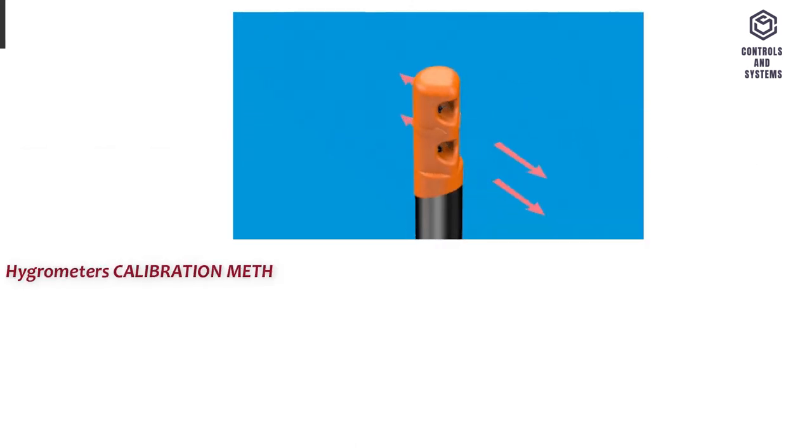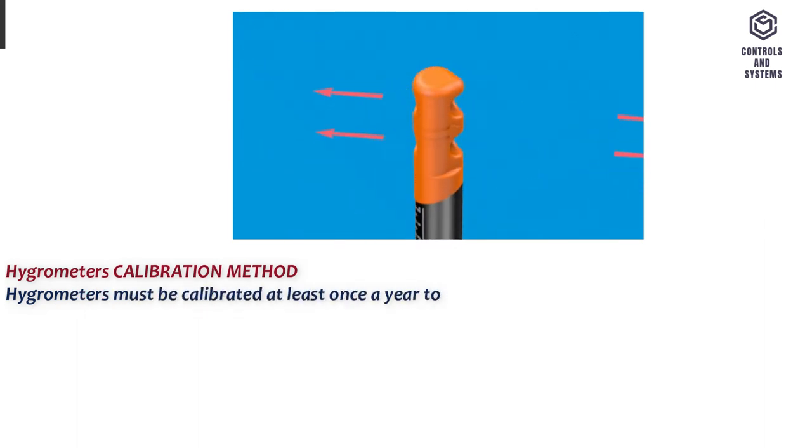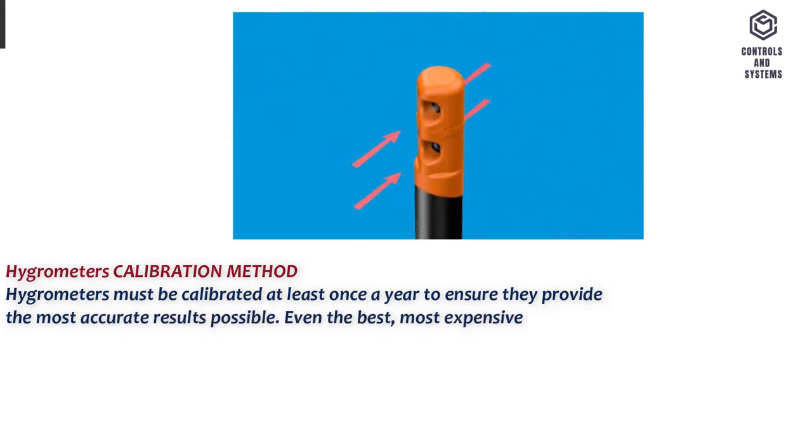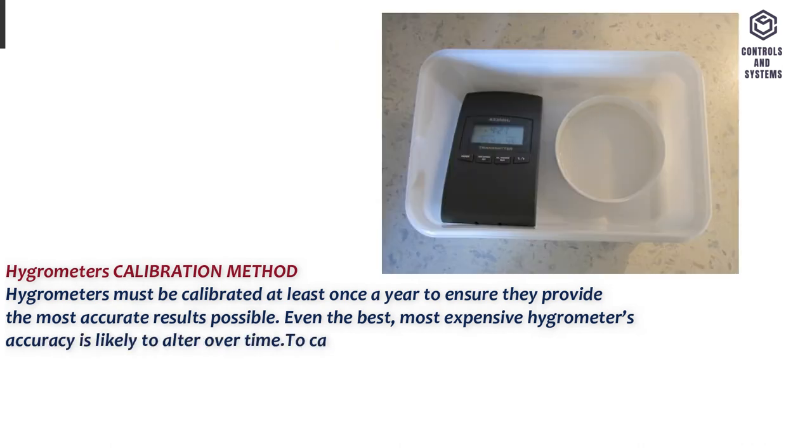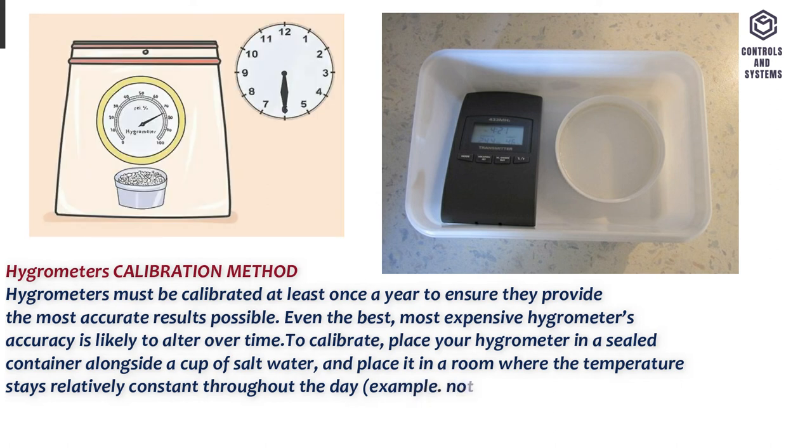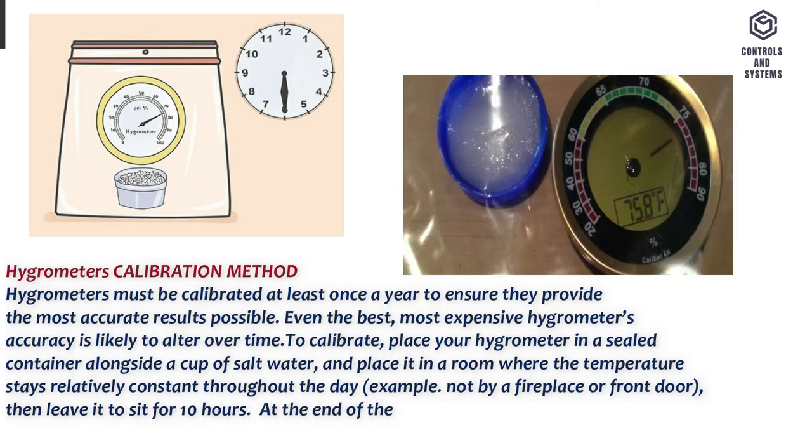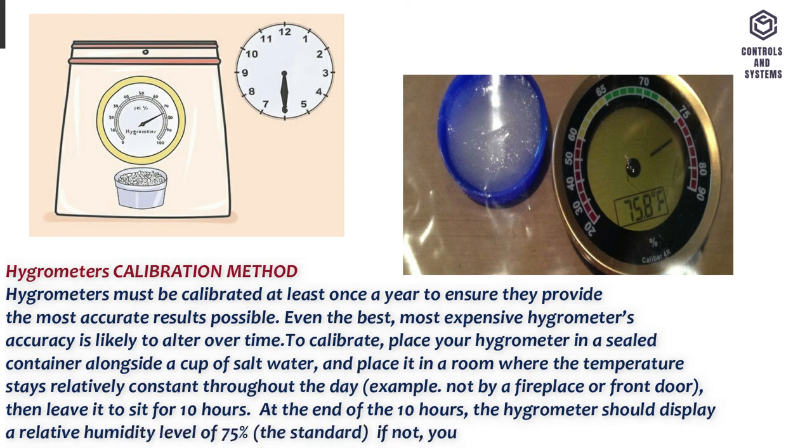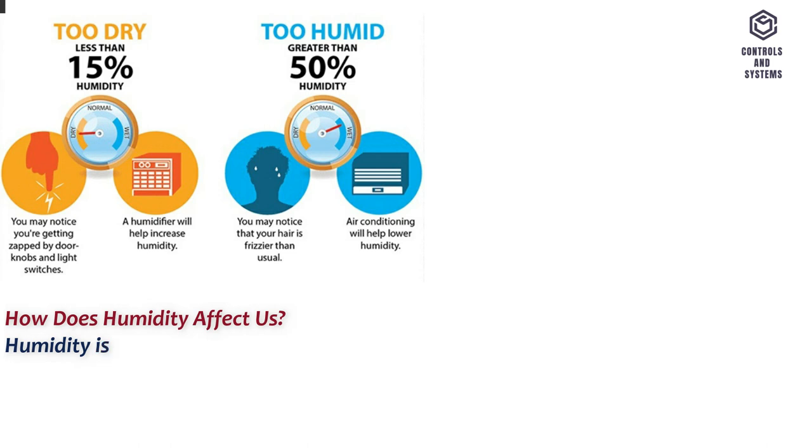Hygrometers calibration method. Hygrometers must be calibrated at least once a year to ensure they provide the most accurate results possible. Even the best, most expensive hygrometers accuracy is likely to alter over time. To calibrate, place your hygrometer in a sealed container alongside a cup of salt water, and place it in a room where the temperature stays relatively constant throughout the day, for example not by a fireplace or front door, then leave it to sit for 10 hours. At the end of the 10 hours, the hygrometer should display a relative humidity level of 75%, the standard. If not, you need to adjust the display.